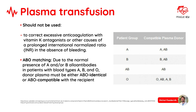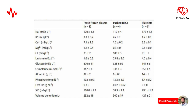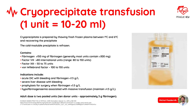Here you can find the summarized content of all previously mentioned blood products. Cryoprecipitate is prepared by thawing fresh frozen plasma between 1 and 6 degrees Celsius and recovering the precipitate. It contains fibrinogen, factor VIII, and von Willebrand factor. Indications include acute DIC with bleeding and low fibrinogen, severe liver disease with bleeding, prophylaxis for surgery when low fibrinogen is present, and hypofibrinogenemia associated with massive transfusion.